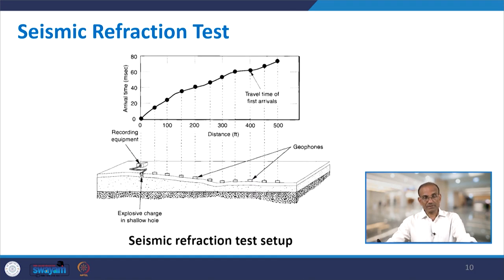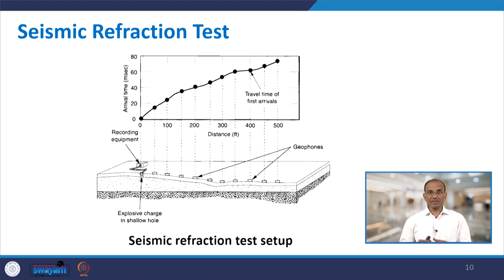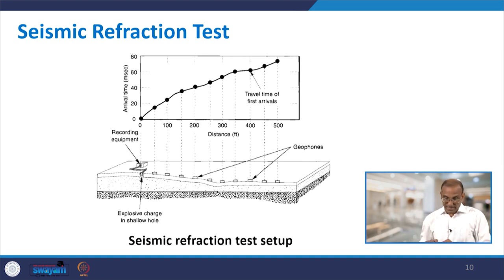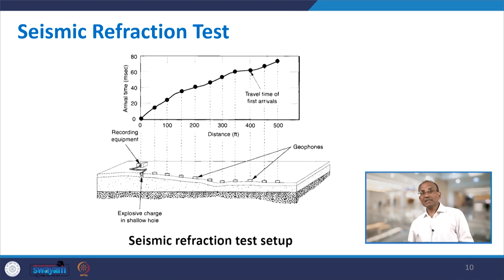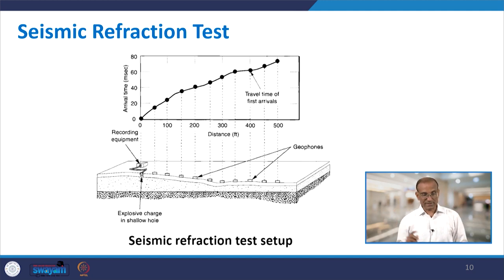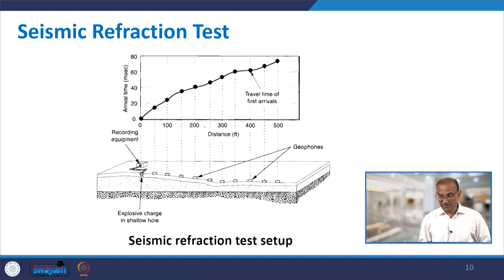Looking at the seismic refraction setup: in the bottom figure you have a source — an explosive charge — connected to recording equipment through geophones. You have a number of geophones spread out, normally kept at equal spacing. For example, every 50 feet one geophone is placed.